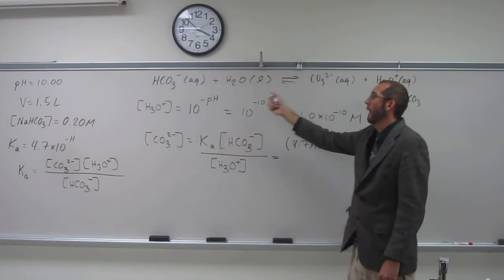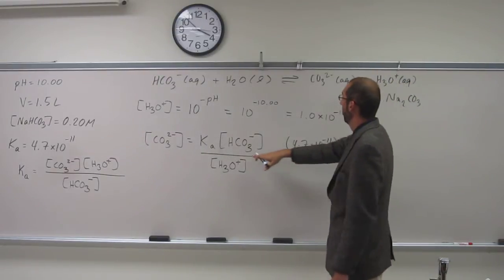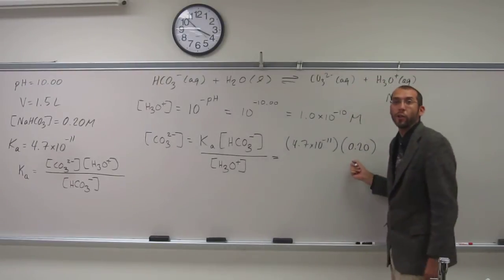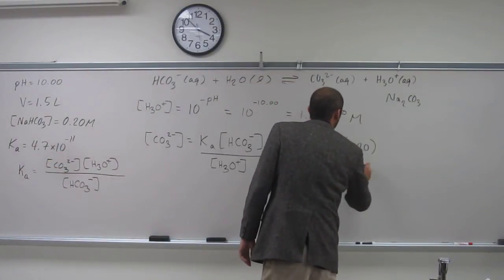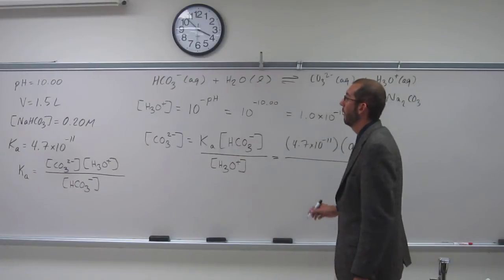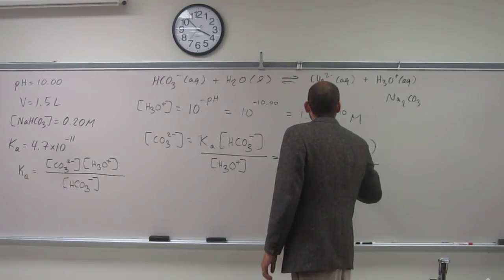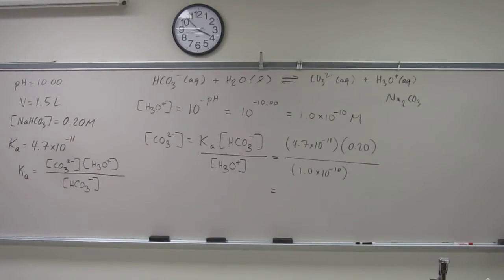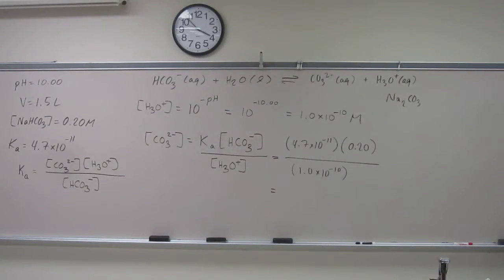If you noticed, I did an ICE table here in my head. So bicarbonate, 0.20 - the concentration didn't change. Why? Because the Ka is so small. Down here, H3O plus - what is it? 1.0 times 10 to the negative 10.